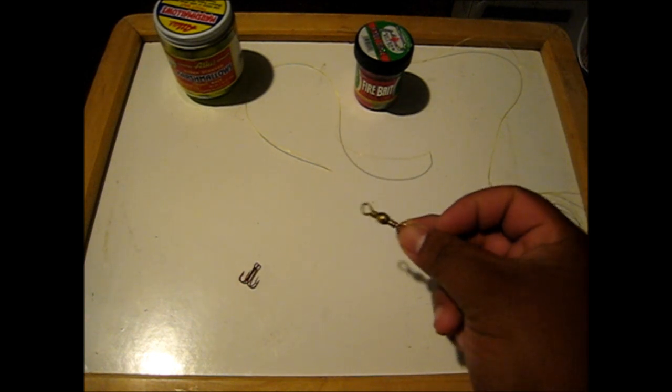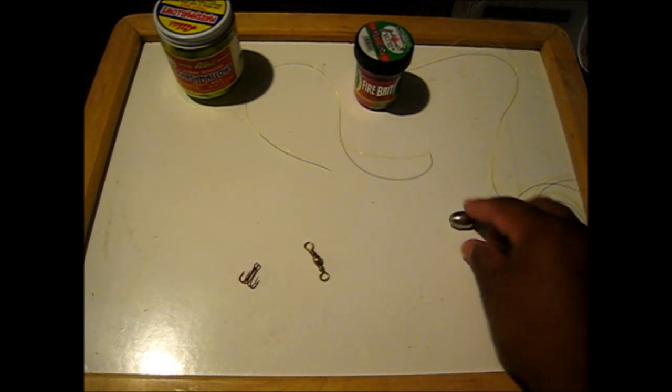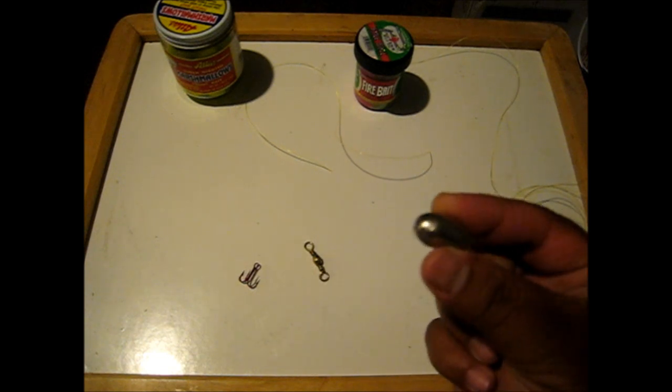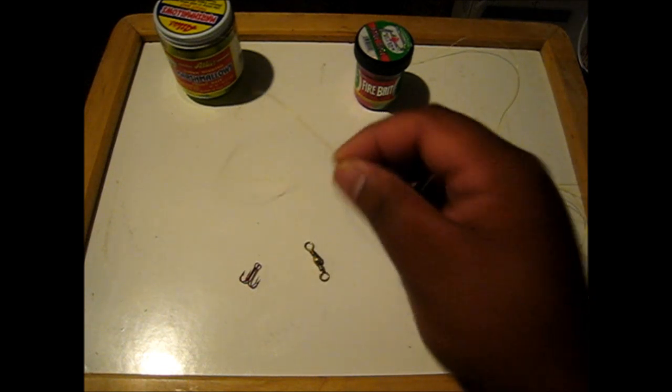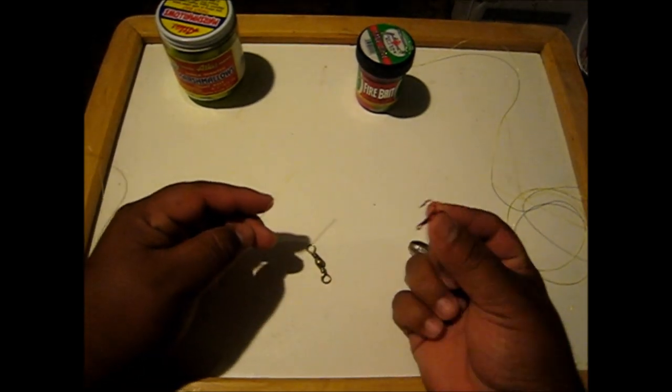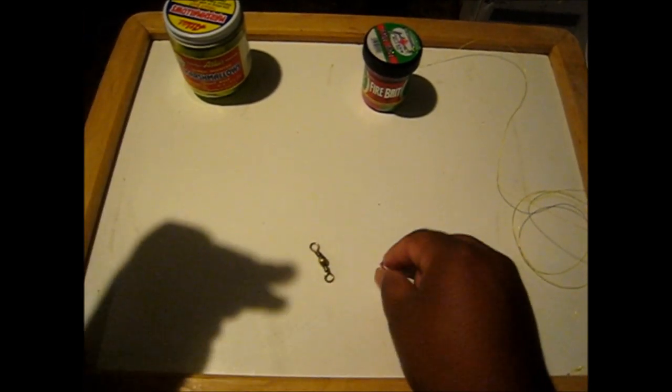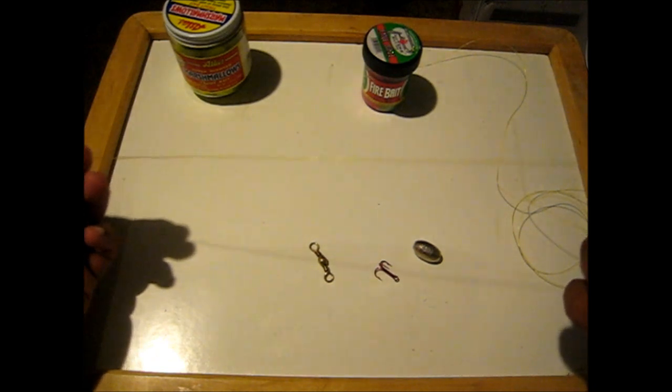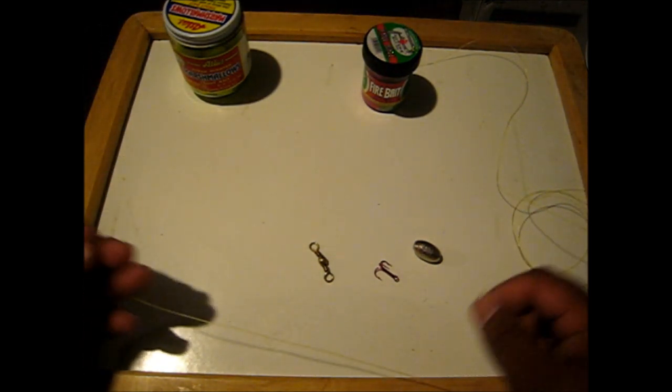The swivel, which is a larger swivel than I would normally use, and a one ounce egg sinker. So to go ahead and start off, what I normally do is I end up tying my leader line, which I usually use about a foot and a half to two feet of leader line.